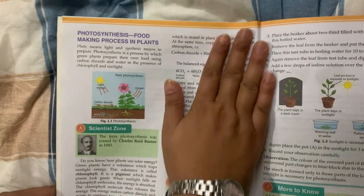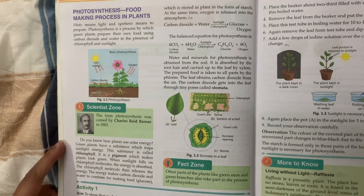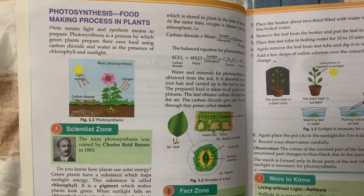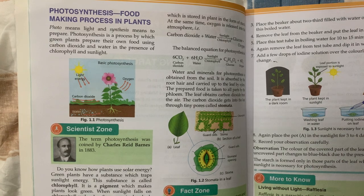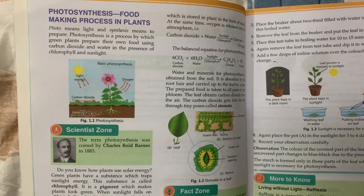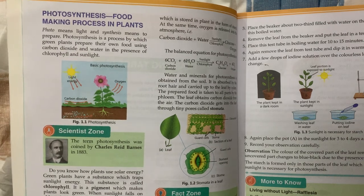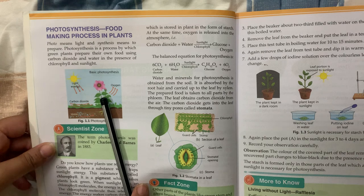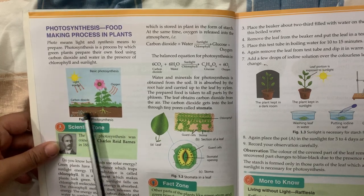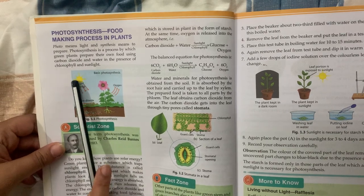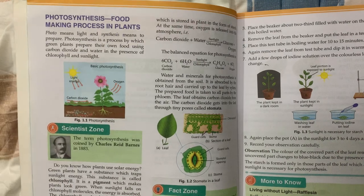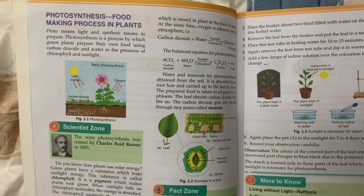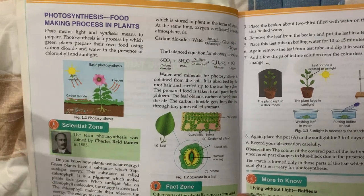Now children, what do you mean by photosynthesis? Does anyone know the meaning of photosynthesis? You all know that green plants make their own food. Everyone knows that green plants make their own food in the presence of air, water, and sunlight. This process in which a green plant makes its own food in the presence of air, water, and sunlight is known as photosynthesis.